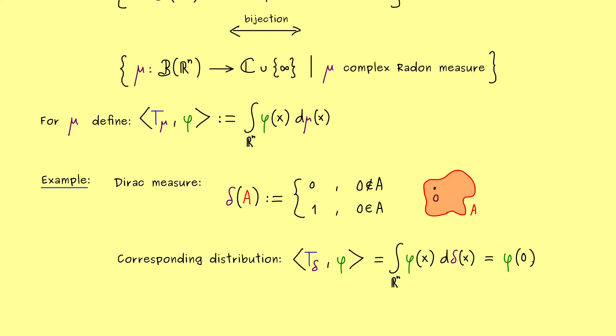Hence, φ of 0. In other words, our T_δ here is nothing else than the delta distribution. Hence, we conclude, with our bijection from before, the Dirac measure and the delta distribution are exactly the same thing.